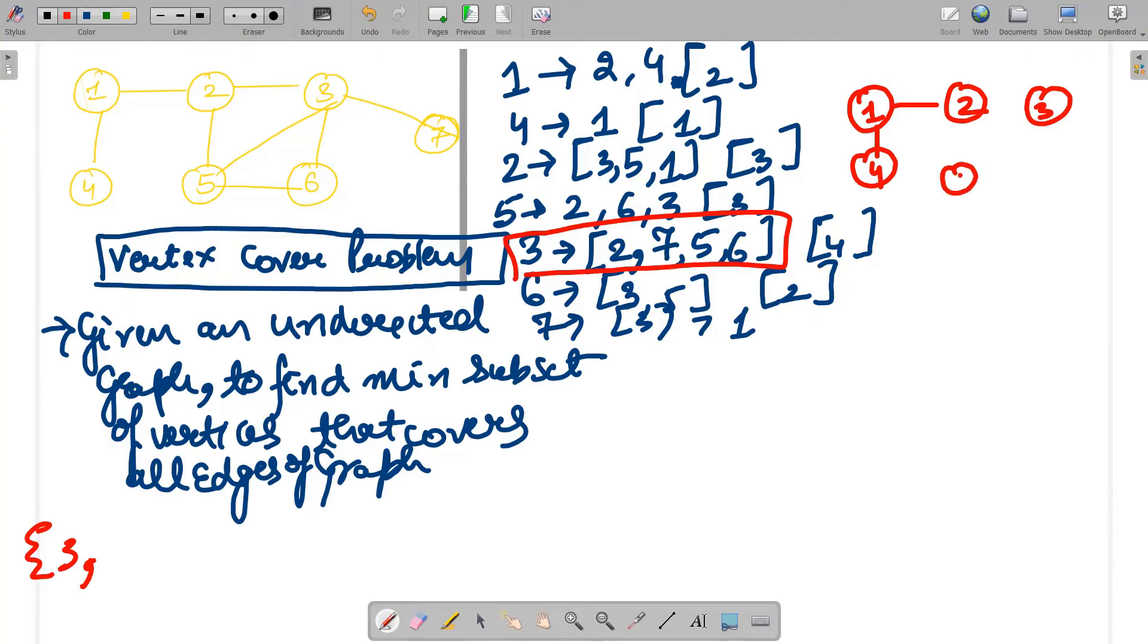Now we have 3 but 3 will have no connections now because we have already taken its connections. We will have 5, 5 is connected to 2, 5 is also connected to 6 I guess and then 3 is not connected to anything now. So we've got 5, 5 is connected to 3, 5 is connected to 2, 2 is connected to 3 earlier.